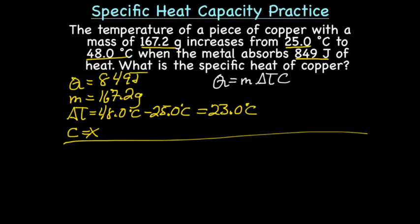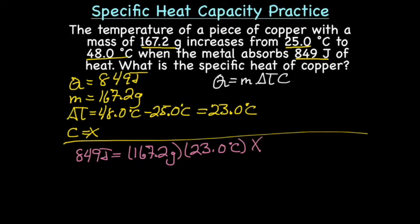So, we have Q equals the mass, 167.2 grams, times delta T, which is 23.0 degrees Celsius, times C, which is our X.